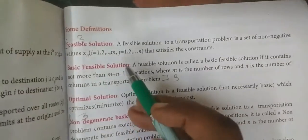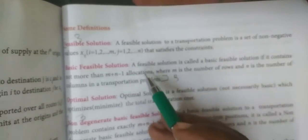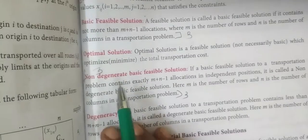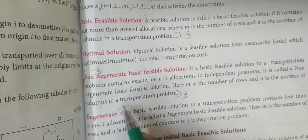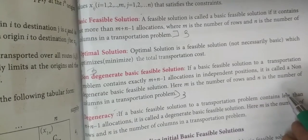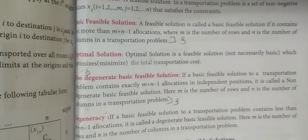The definitions are first: feasible solution, basic feasible solution, optimal, non-degenerate feasible solution, and degeneracy. These are two marks, so you will learn all the definitions.